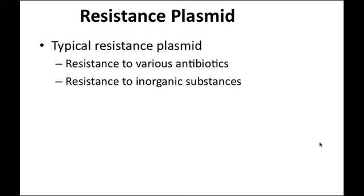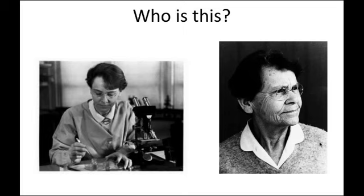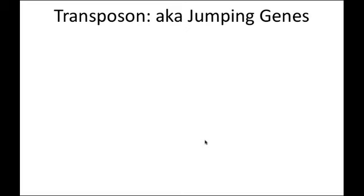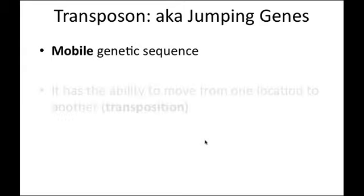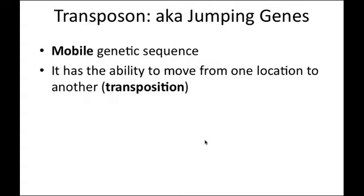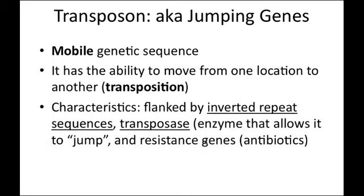The most unique genetic elements are transposons, first identified by Barbara McClintock while studying corn plant breeding — she noticed the different colors of corn kernels and discovered these 'jumping genes.' Transposons are mobile genetic sequences that can move within the chromosome or between plasmids through transposition events. They have inverted repeat sequences and a transposase enzyme that cuts the sequence out and moves it to a new location.